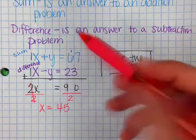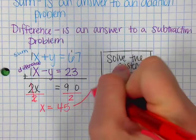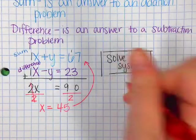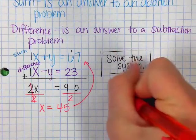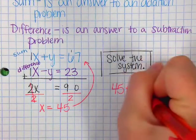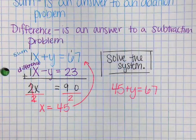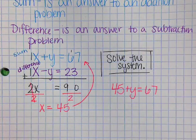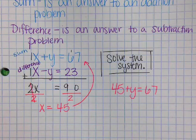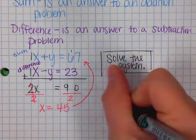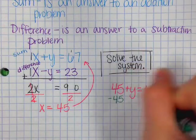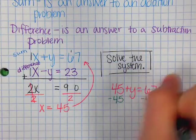I'm going to do the top one, because again, I don't like using negatives. So I'm going to plug this into the top one. So then it would be 45 plus y equals 67. Then I'm going to subtract 45. Subtract 45.